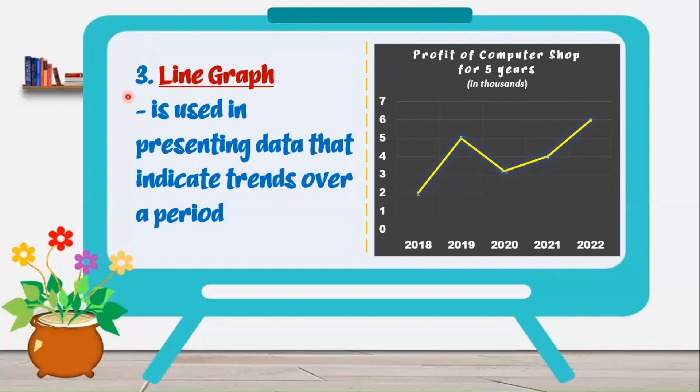Next is the line graph. It is used in presenting data that indicate trends over a period. The trend may be falling or rising. For example, the profit of the computer shop for 5 years. We have here indicated in thousands. That means the numbers from 1 to 7 that reflected in the y-axis means 1,000, 2,000, 3,000, and so on. Since we cover only 5 years, we start from 2018 until 2022.